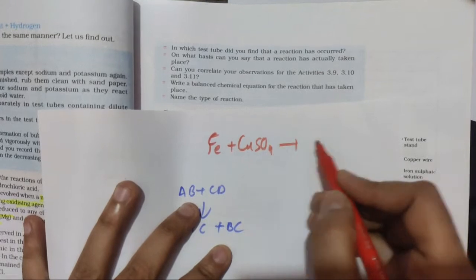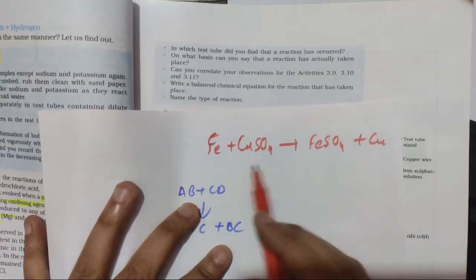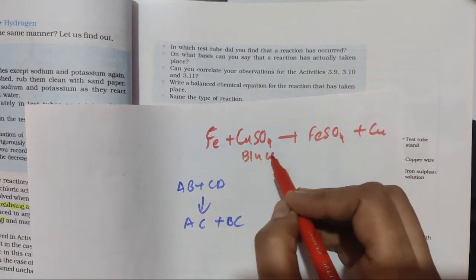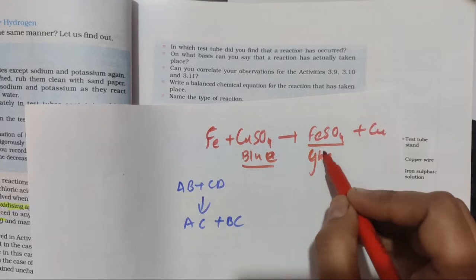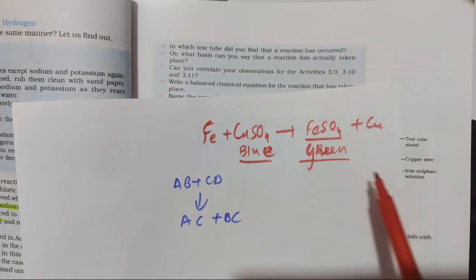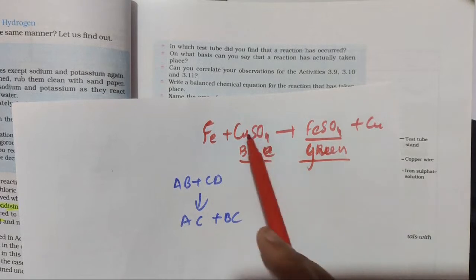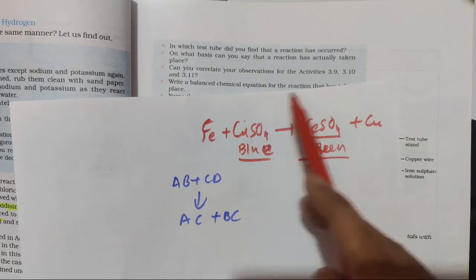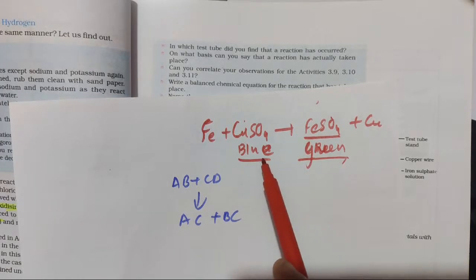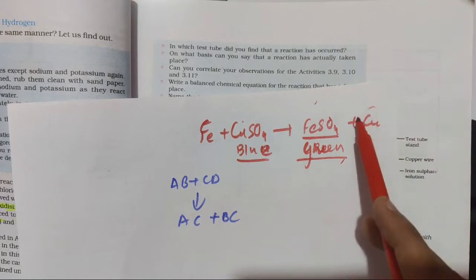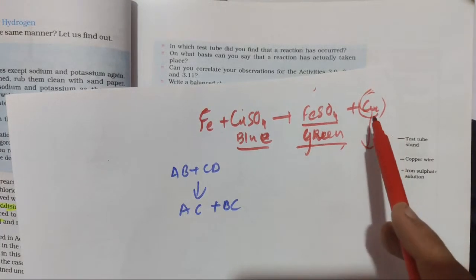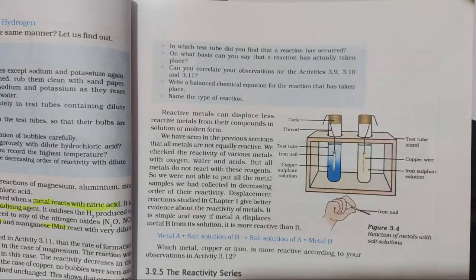This reaction is a single displacement reaction: Fe + CuSO₄ → FeSO₄ + Cu. The CuSO₄ solution is blue; with passage of time the color changes from blue to green. The observation is: the blue color changes to green, and a shiny copper deposit forms on the iron nail.